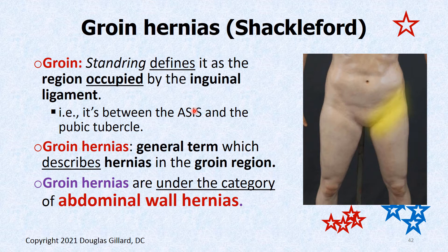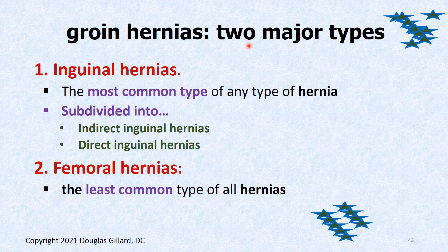Let's look at groin hernias now — still a category of abdominal wall hernia. The groin is the area between the ASIS and the pubic tubercle. According to Standring and Shackelford, it is under the category of abdominal wall hernia. There are two major types of groin hernias: inguinal hernias, which are by far the most common, and femoral hernias, which are the least common. We can subdivide inguinal hernias into indirect and direct.